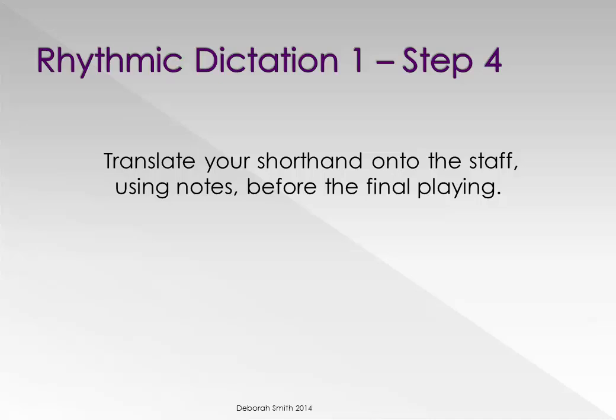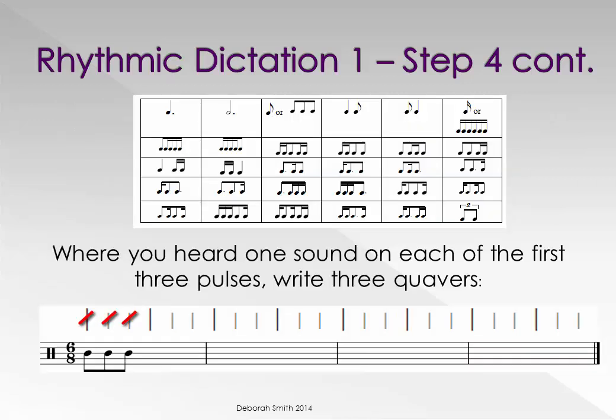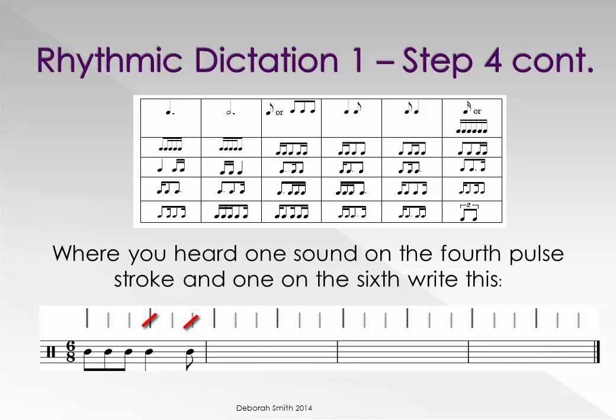Translate your shorthand onto the staff using notes before the final playing. This step can be made much easier by writing a rhythm set before you hear the dictation. A rhythm set is all the possible rhythms that may be used in a particular dictation. Where you heard one sound on each of the first three pulses, write three quavers like this. And where you heard one sound on the fourth pulse stroke and one on the sixth, write this.